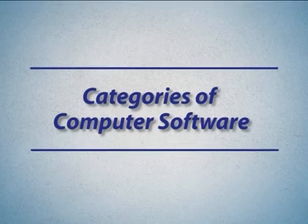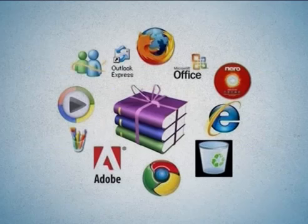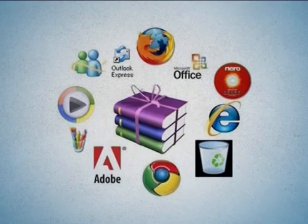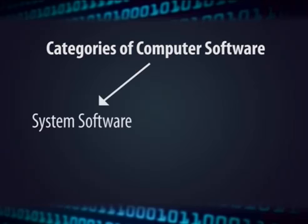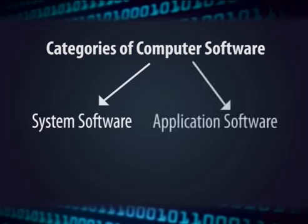Categories of computer software: There are many types of computer software. It is often divided into two categories: system software and application software.